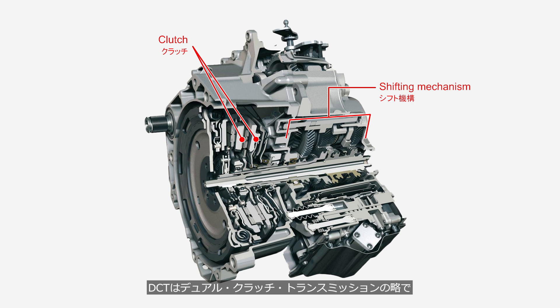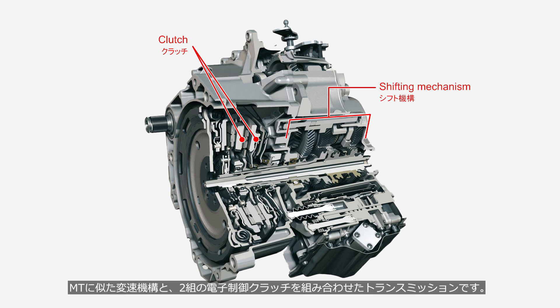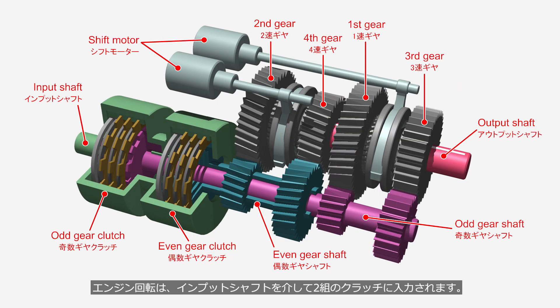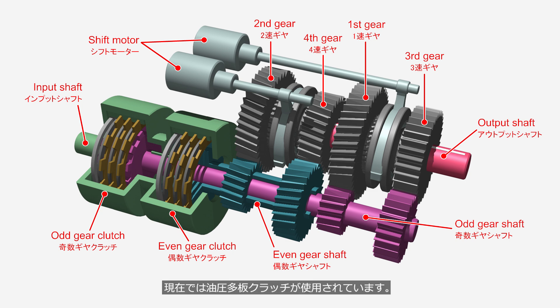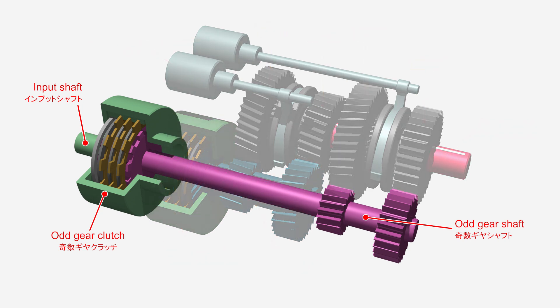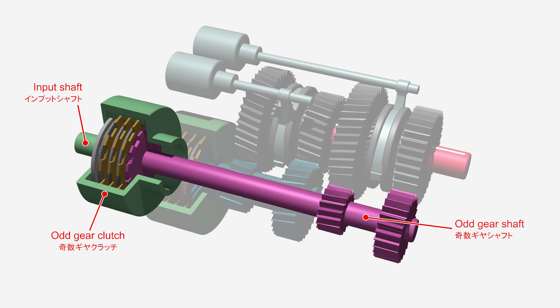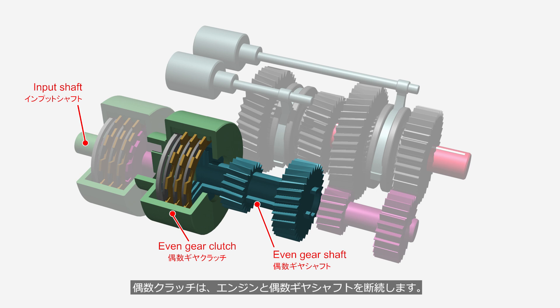DCT stands for Dual Clutch Transmission, a transmission that combines a gear shifting mechanism similar to that of a manual transmission with two electronically controlled clutches. The engine rotation is transmitted to the two clutches via the input shaft. Single plate clutches were used in the past, but now hydraulic multi-plate clutches are used. The odd gear clutch engages and disengages the engine in the odd gear shaft, while the even gear clutch engages and disengages the engine in the even gear shaft.